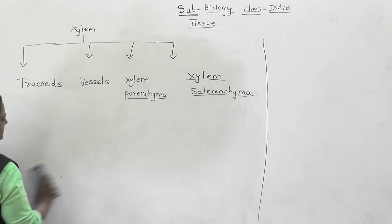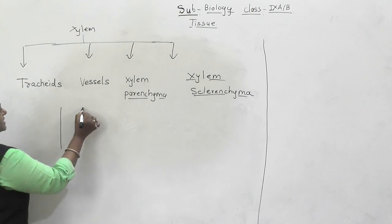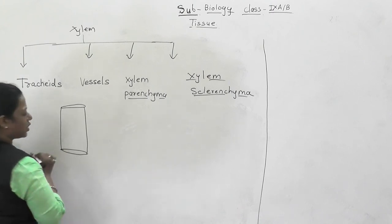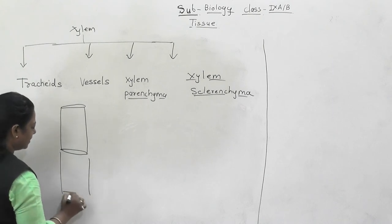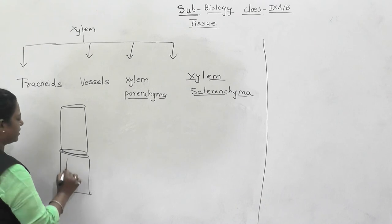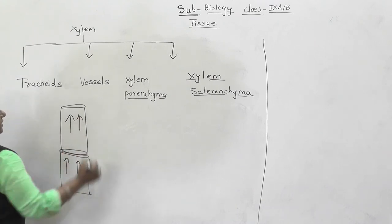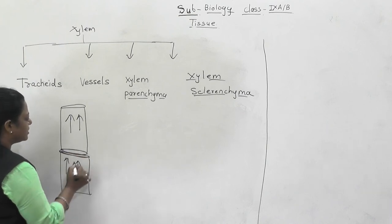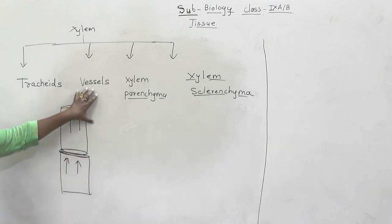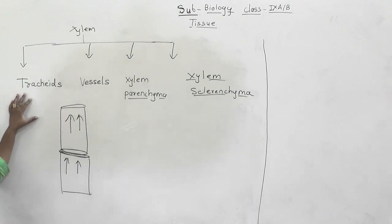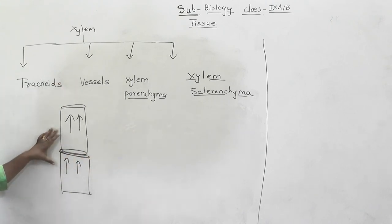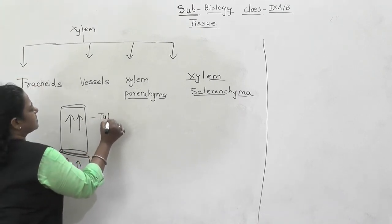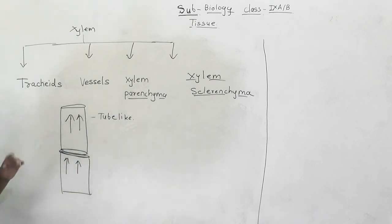Now for vessels - how are vessels designed? The vessel's upper and lower ends are open, and so vessels can be arranged one above the other. Water can flow easily through them from bottom to top. So tracheids move water horizontally while vessels move water vertically. Vessels are also tube-like structures.